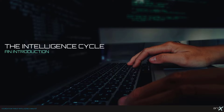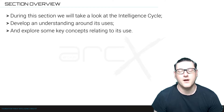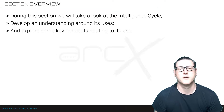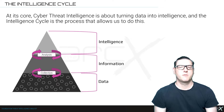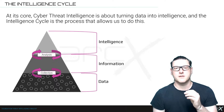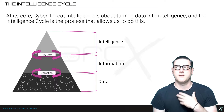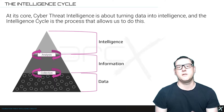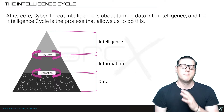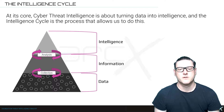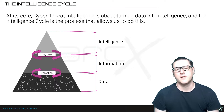The intelligence cycle — just an introduction. During this session we'll take a look at the intelligence cycle and explore some key concepts about how it's used and how we're going to be using it through the rest of the course. At its core, as we've seen, cyber threat intelligence — or threat intelligence in general — is about turning data into intelligence, and the intelligence cycle is essentially the overall process of how we go about doing this.